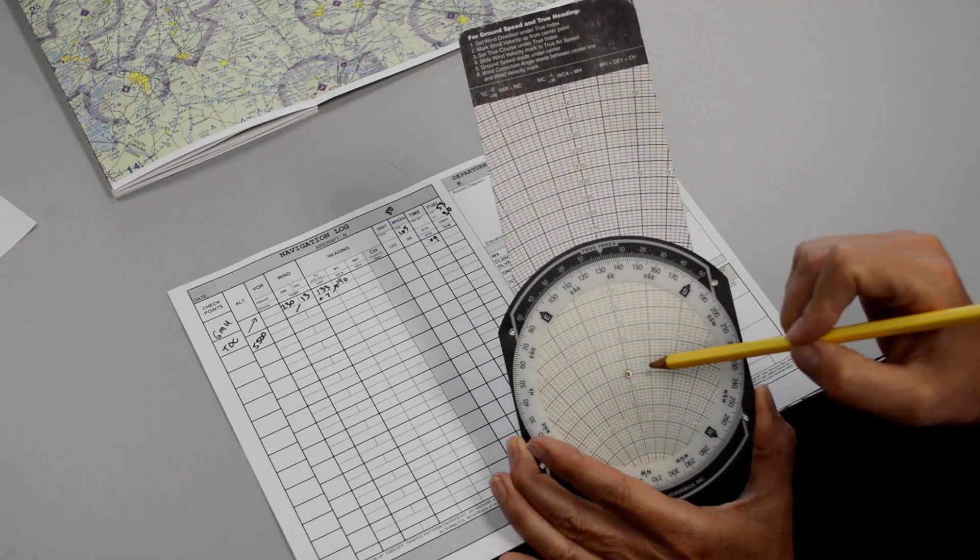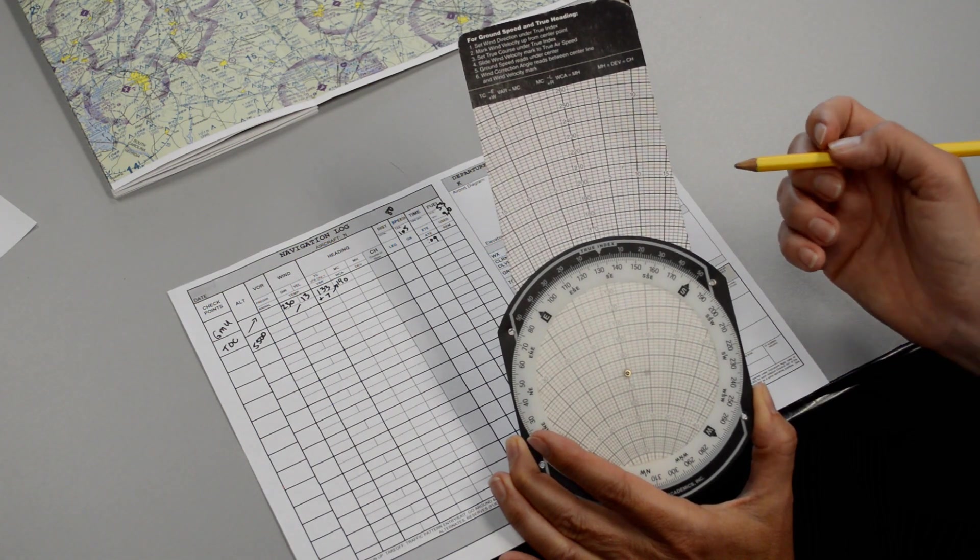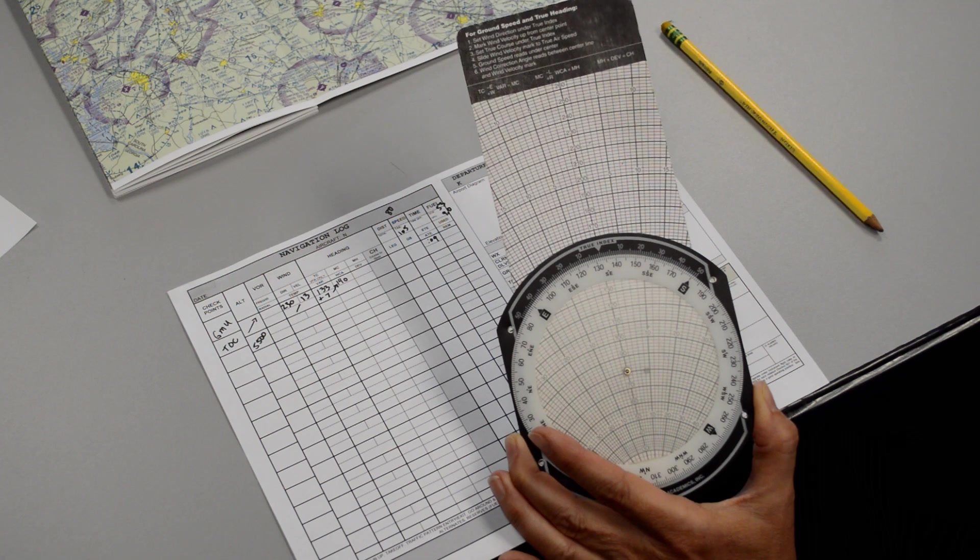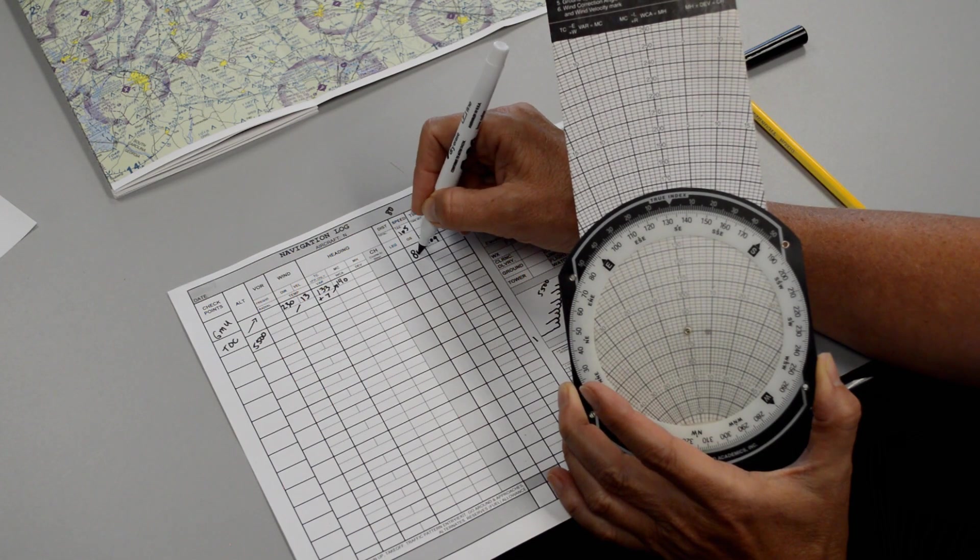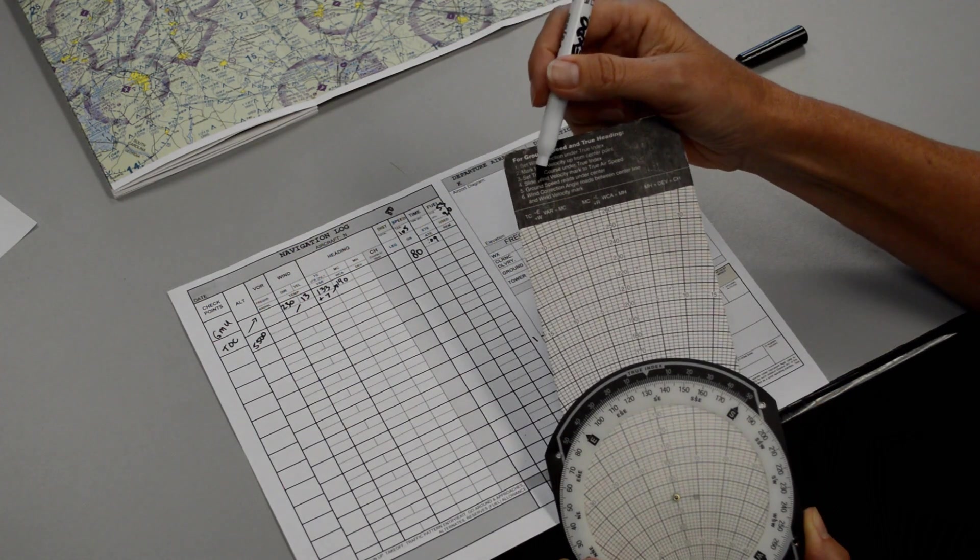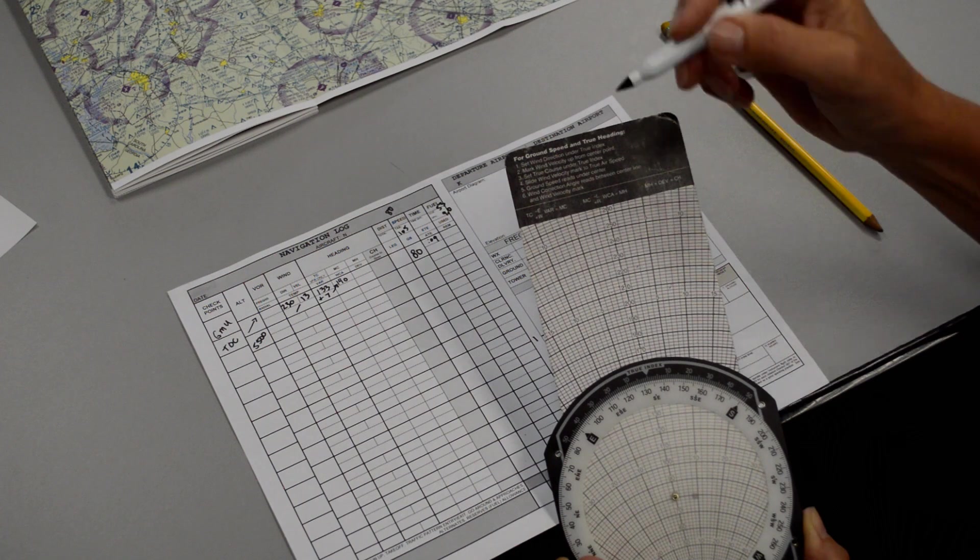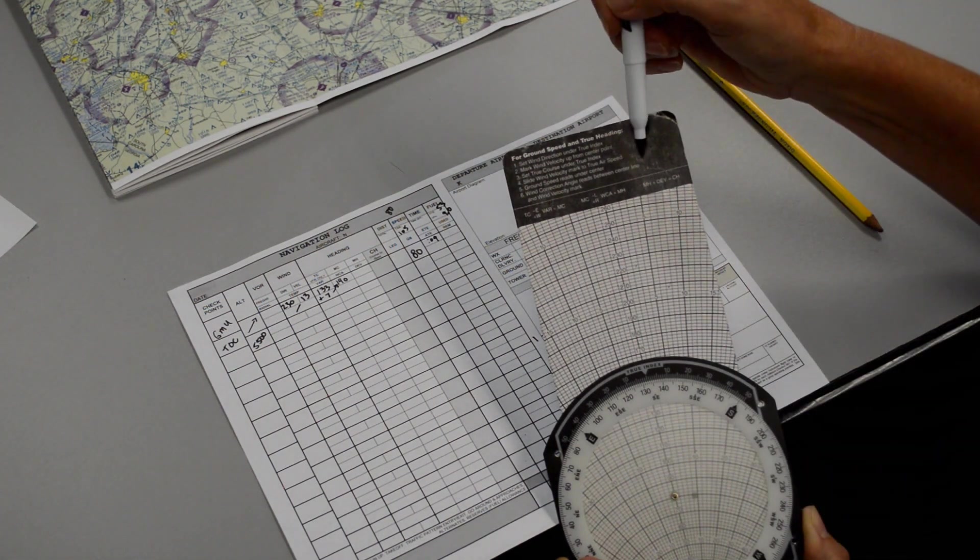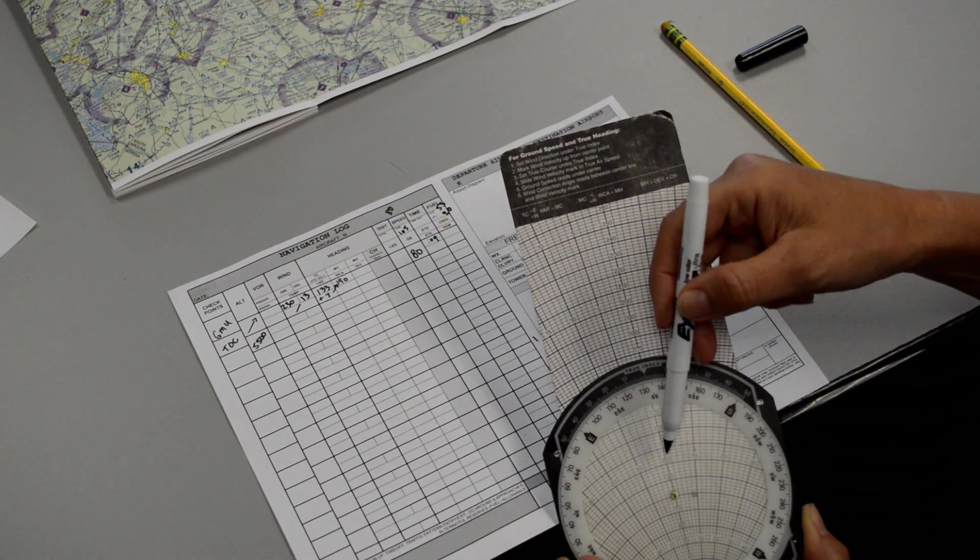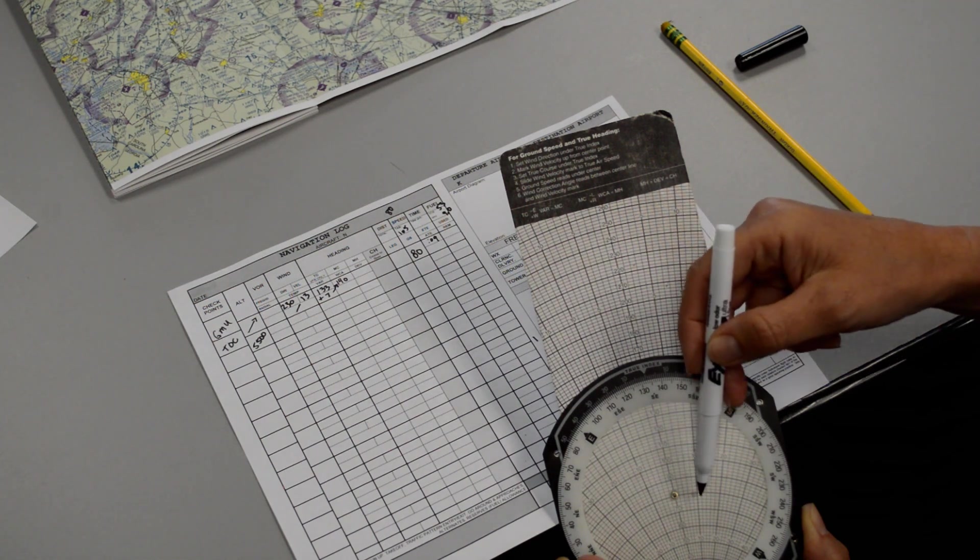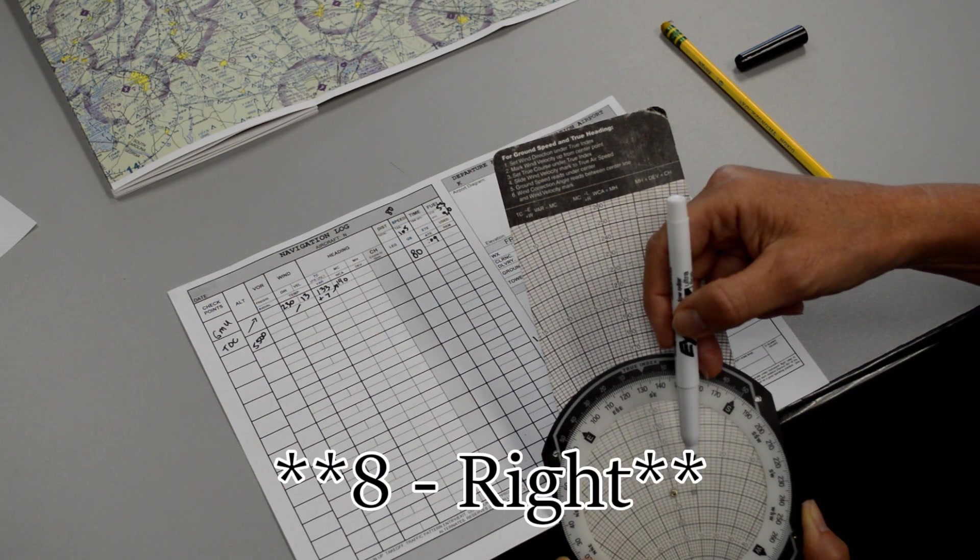Number five says our ground speed reads under the center. So our ground speed ends up being 80 also, because basically we have a direct crosswind. So we can put our ground speed on our navigation log for the climb portion as 80. The second bit of information that was revealed to us is number six. Wind correction angle reads between the center line and the wind velocity mark. That's the mark you made with your pencil. So if you look at the center line and then you go over here to the next bold line, you see 10, 20, 30. So it appears that it's about 9 to the right.